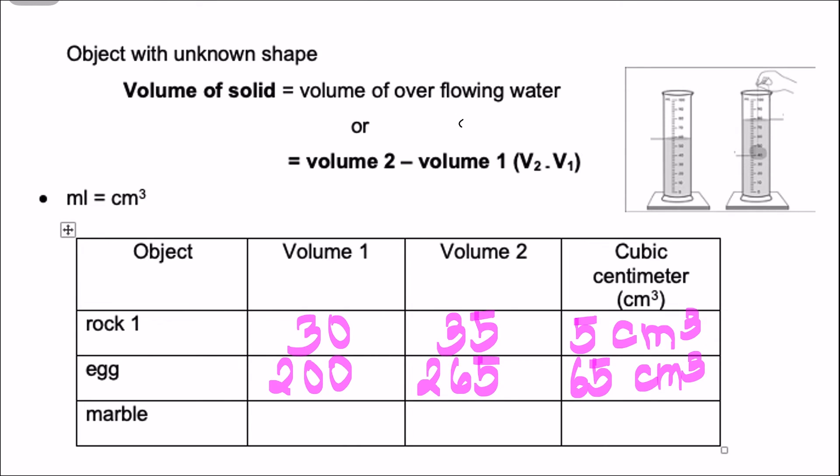How about the marble? Volume 1 is 20, volume 2 is 22, and the answer is 2 cubic centimeter.